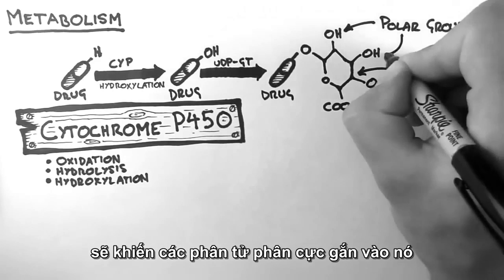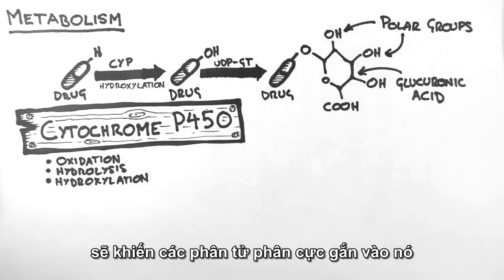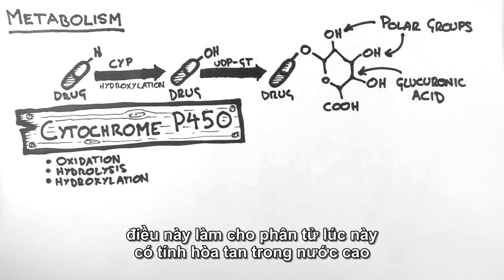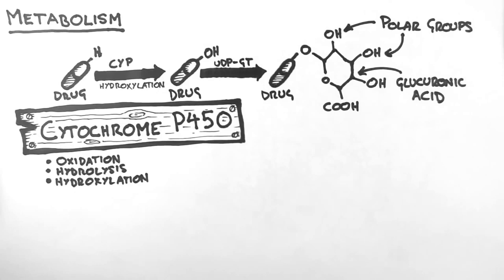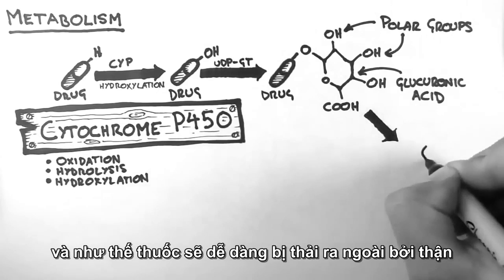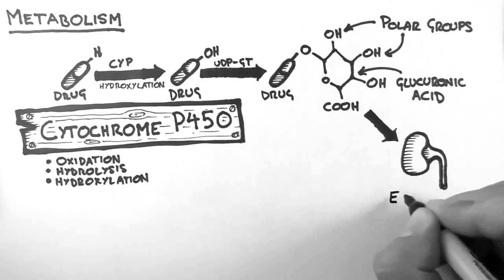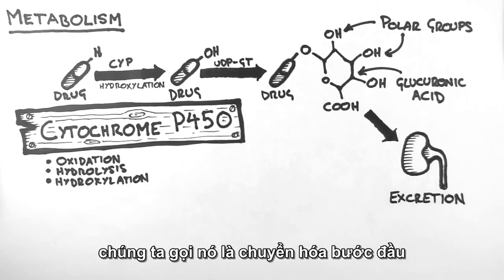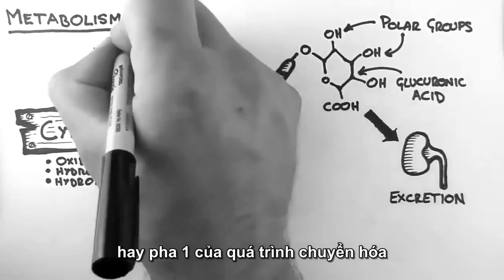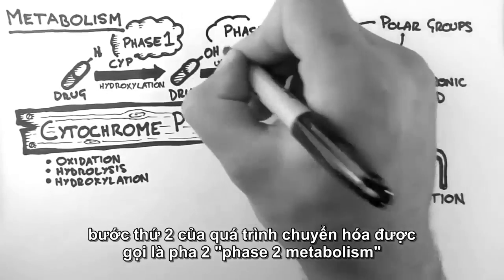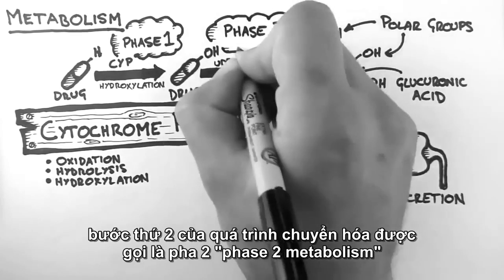The glucuronic acid group has many polar groups attached to it, namely three hydroxyl groups and a carboxylic acid group. This makes the molecule extremely water-soluble or hydrophilic. Thus the drug can be easily filtered and excreted by the kidneys. We call this first part of the process phase 1 metabolism. The second part of the process we call phase 2 metabolism.